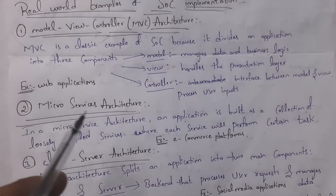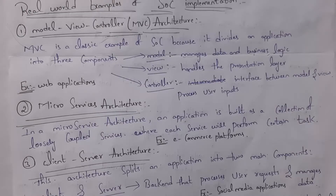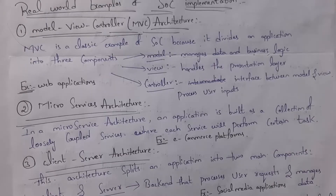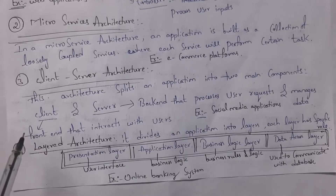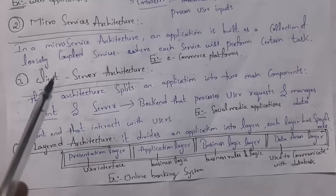The next example is Microservices Architecture. Microservices Architecture also follows separation of concerns because in microservices, we break our application into various parts based on services, and each service performs certain tasks. E-commerce websites and applications are examples of Microservices Architecture. The third one is Client-Server Architecture, which is divided into two main components — client and server — and so this is also an example of separation of concerns. Social media applications are examples of Client-Server Architecture.